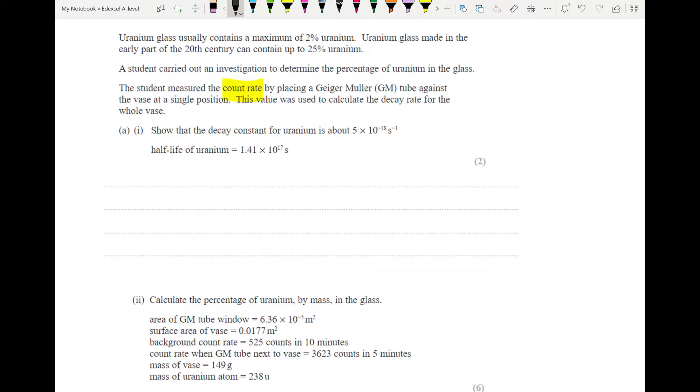This is a fairly standard first question. It's just using the equations that are given to you in the data book, and so we're going to use the equation lambda is equal to ln2 over t half, which is the half-life. And so it's a fairly straightforward calculation. It's ln2 over 1.41 times 10 to the 17, giving us an answer of 4.92 times 10 to the minus 18, and don't forget the unit per second. We know it's per second because our half-life is given in seconds, and that means your decay constant is in per second.